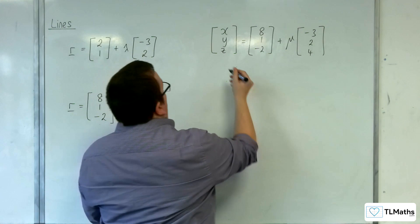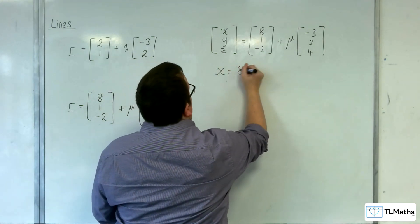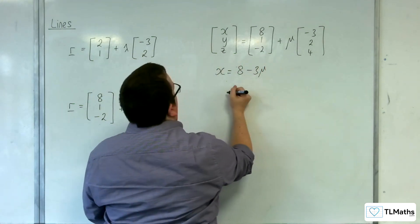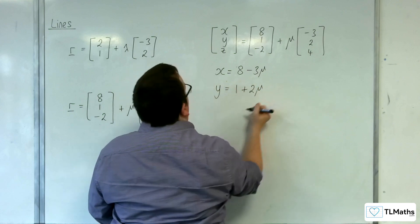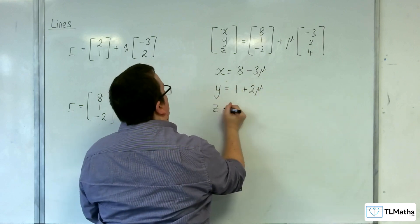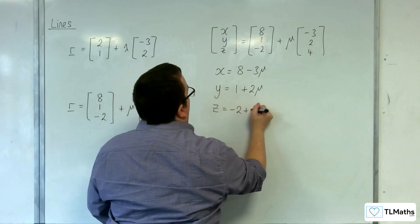So, we've got a top row, x equals 8 take away 3 mu. We've got a middle row, y is equal to 1 plus 2 mu. And we've got a bottom row, z is equal to minus 2 plus 4 mu.